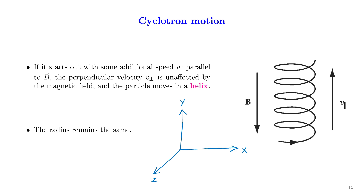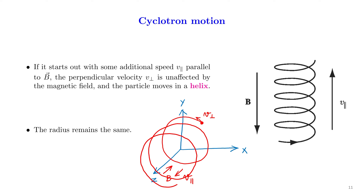In addition to a velocity in the x-y plane, let us assume there is also a velocity along the z direction. The magnetic field was along the z direction, and the velocity component parallel to the magnetic field is denoted v-parallel, while the component perpendicular to the magnetic field is v-perpendicular. When we have a parallel component for the velocity, the particle executes a helical path — the radius of the trajectory remains the same, but the particle now moves in a helical path.